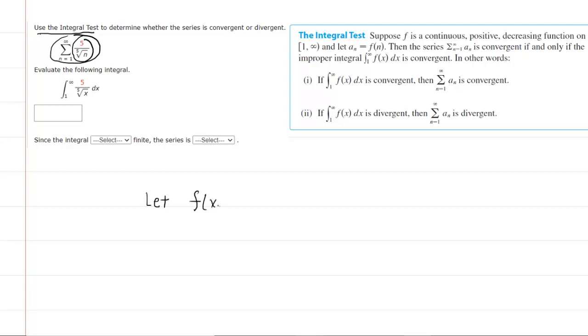We'll let f of x equal our series definition, which is 5 over the fifth root of x. Notice you're going to be using x rather than n. The next thing you have to confirm is whether your function is continuous, positive, and decreasing on the interval from 1 to infinity.